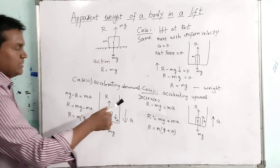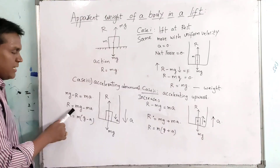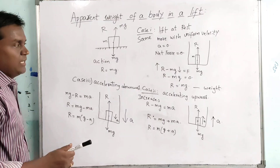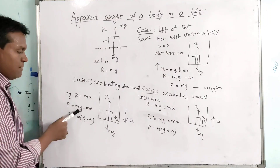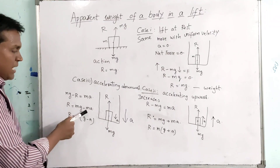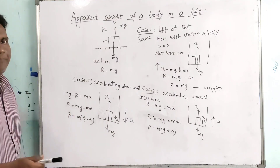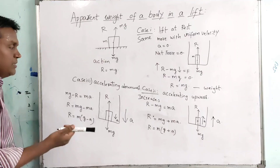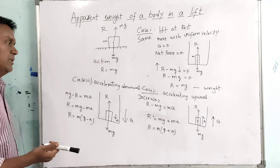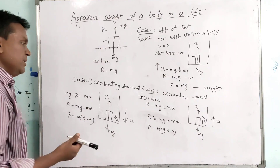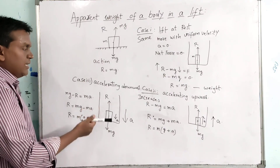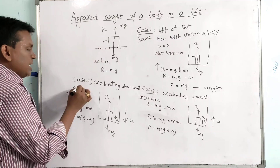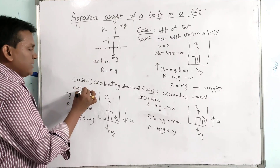The reaction force R equals m(g - a). Since mg is our weight and we subtract ma, something is being reduced. That means when the lift is accelerating downward, our apparent weight decreases.